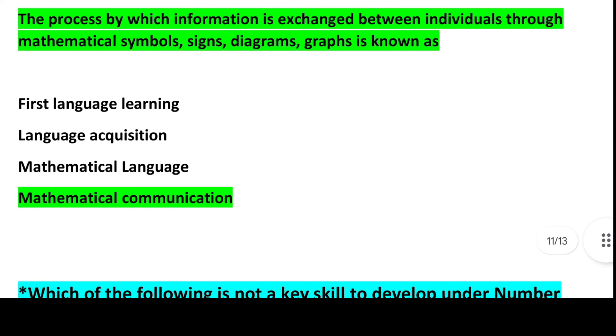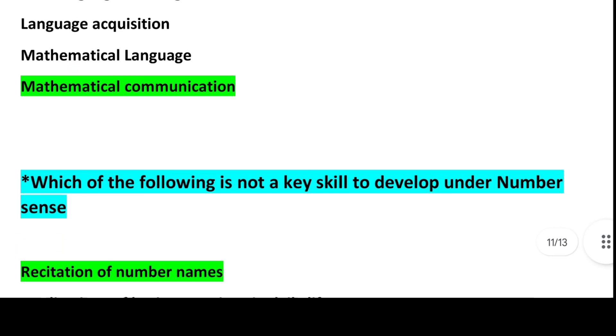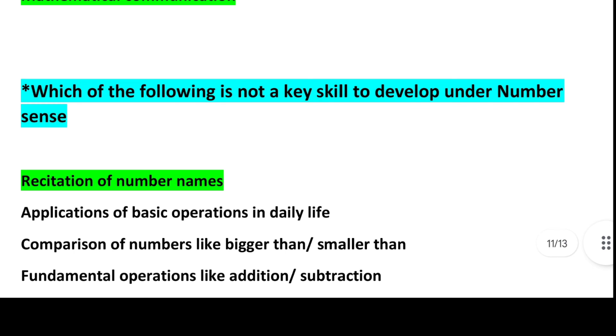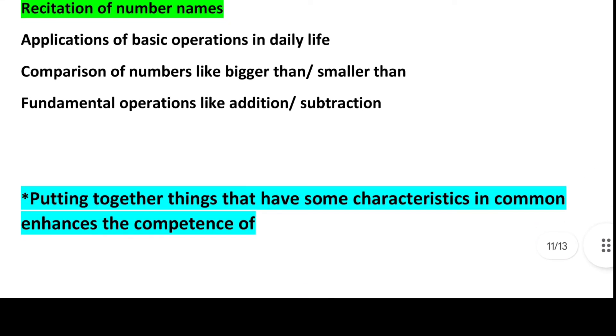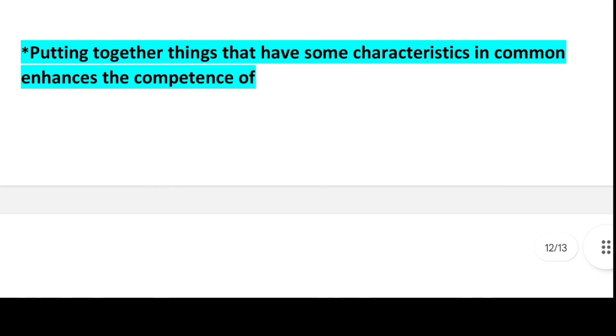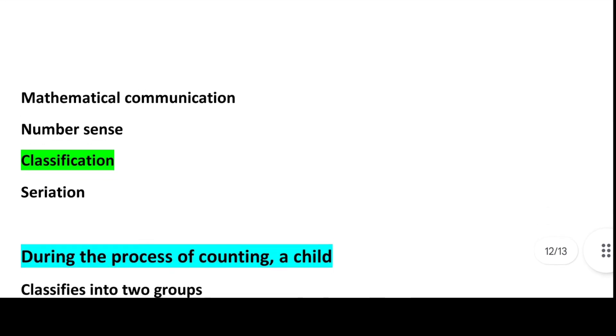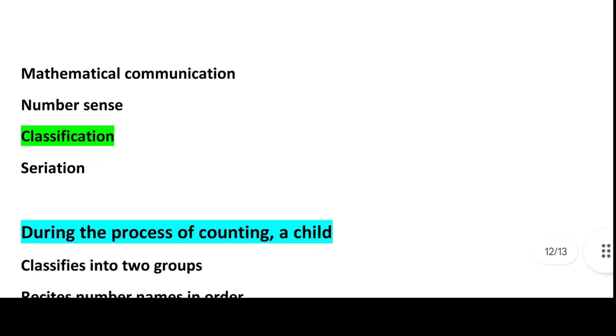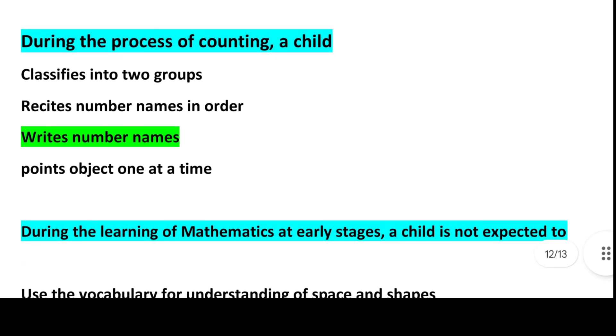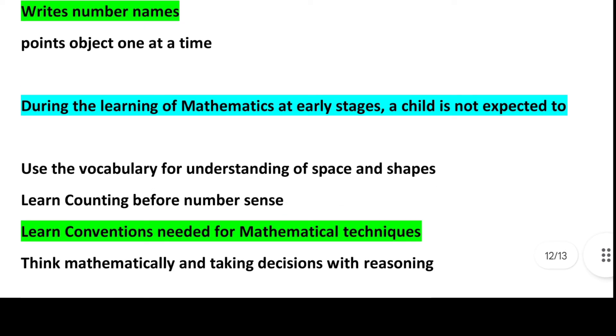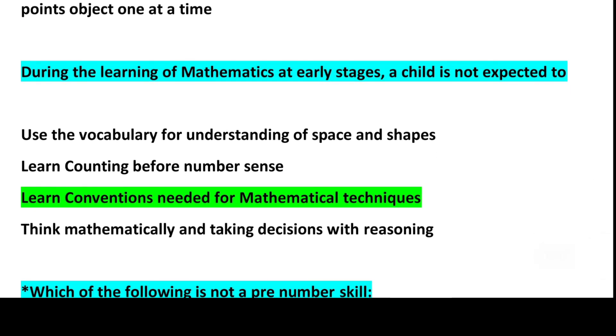Next question: The process by which information is exchanged between individuals through mathematical symbols, signs, diagrams, graphs is known as. Answer is Option 4, Mathematical communication. Next: Which of the following is not a key skill to develop under number sense? Answer is Recitation of number names, Option 1. Next: Putting together things that have some characteristics in common enhances the competence of. Answer is Option 3, Classification. Next: During the process of counting, a child. Answer is Option 3, Writes number names.